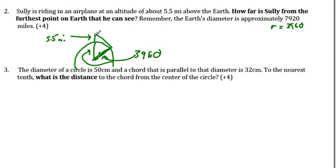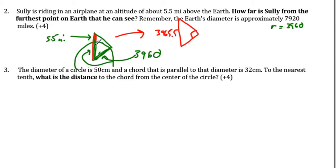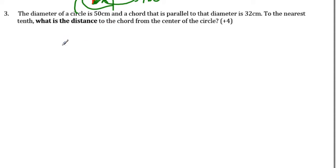The entire length of this line segment is 3960 plus 5.5, so 3965.5 — that's the hypotenuse. The other side is 3960, and we place x for the unknown side. Using a² + b² = c², we find how far the furthest point Sully can see on the earth is. Check your answer for reasonableness. That's the Pythagorean theorem again.